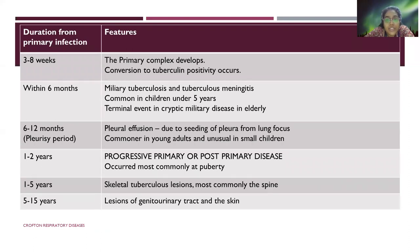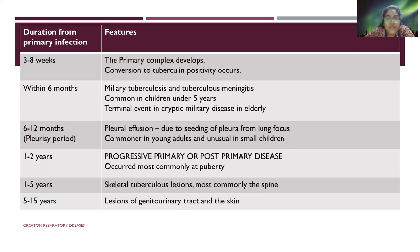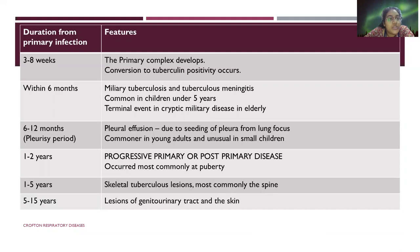The terminal event in cryptic miliary disease happens in the elderly. From six to twelve months from primary infection, there is a likely chance to develop pleural effusion due to seeding of pleura from lung foci, which is common in young adults and unusual in small children. From one to two years, there is a likely chance to develop progressive primary or post-primary disease, which occurs most commonly at puberty.